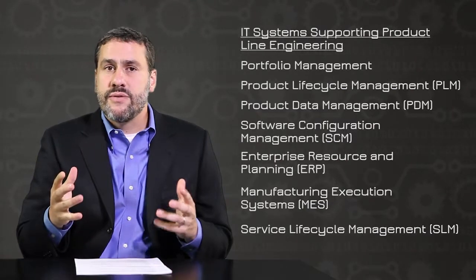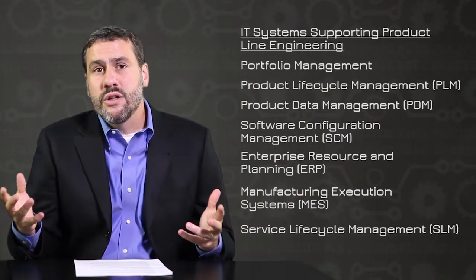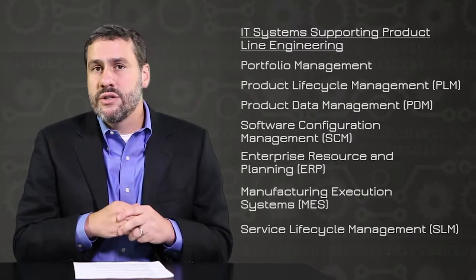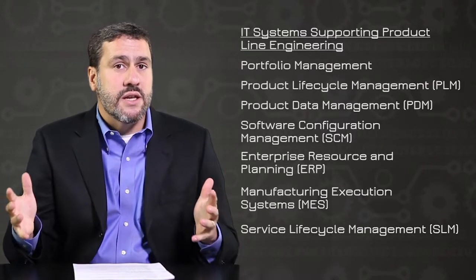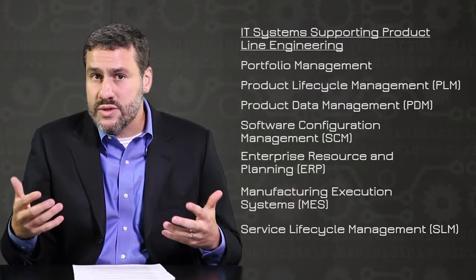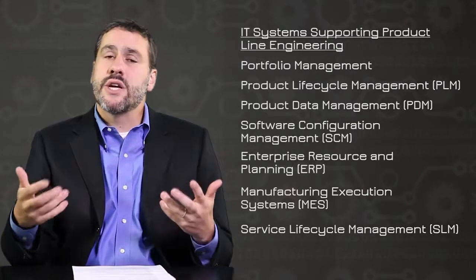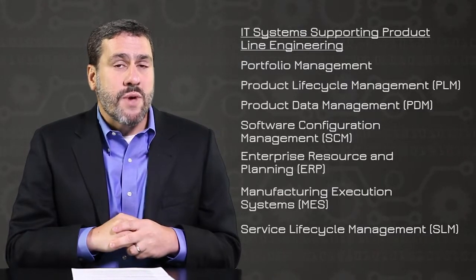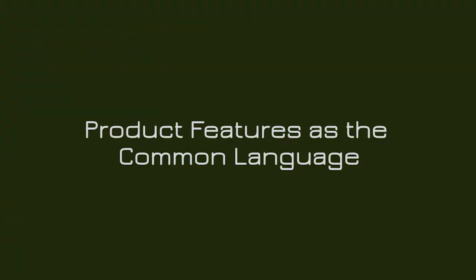The major issue is that in product line engineering, there will be changes made to those product families, and those changes need to propagate to all those different systems. The major issue is that there is no meaningful connection between those systems today to propagate change across these platforms and families — and that is a major issue for managers of product line engineering. Despite these challenges, there is some hope because there is a common language that can be used to communicate change: features.